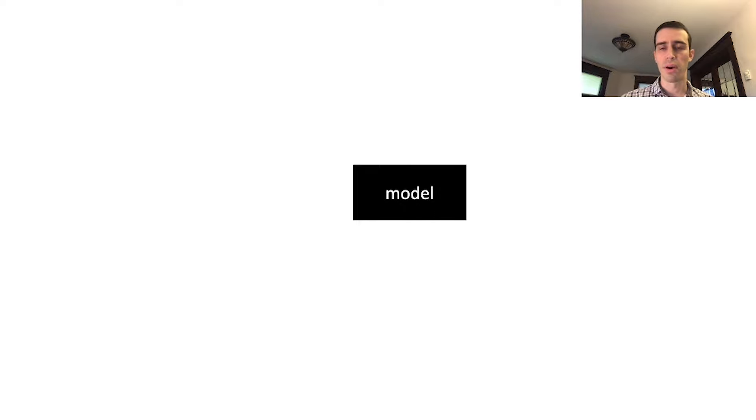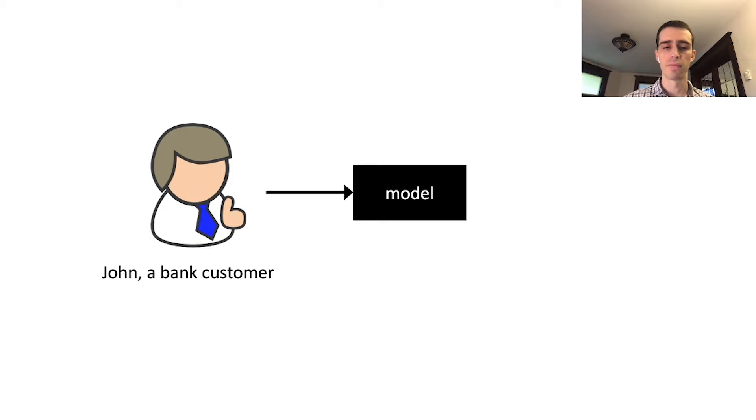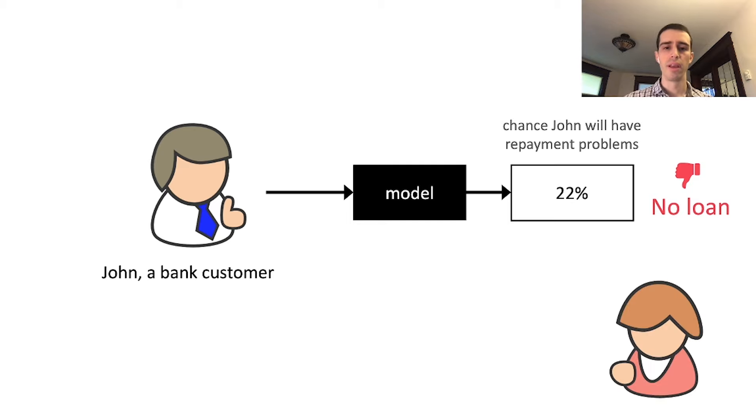To understand how this works, let's start with a model we're going to explain. This model works at a bank and takes information about customers like John, outputting predictions about their likelihood of having repayment problems if given a loan. As a data scientist building this model, you may have used various packages—scikit-learn, linear models, trees, gradient boosted decision trees, deep networks—all in pursuit of producing a good, accurate, high-quality model.